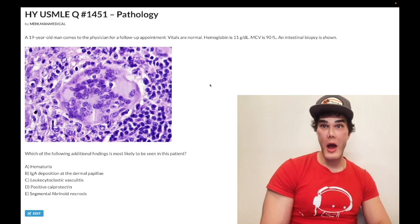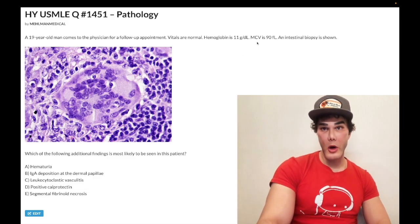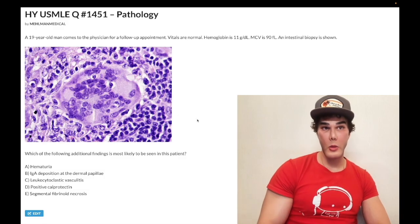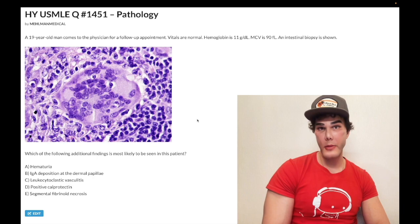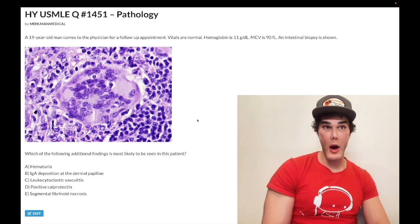So we have an intestinal biopsy here. And even if you're not sure what you're looking at, if you couple the normocytic anemia, anemia of chronic disease, to something intestinal in the setting of an image where it looks circular with a bunch of cells, this is a granuloma. And in what condition do we see granulomas in the intestine? So that makes it passable. Once we simplify it that way, it becomes passable, but required a little bit of thinking to get to that step.